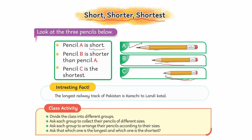B वाली क्योंकि उससे छोटी है, इसका मतलब है Pencil B is shorter than Pencil A — यानि ये B वाली जो है वो A वाली से छोटी है। और अगर C वाली pencil की बात करो, तो ये सबसे छोटी है, इस वजह से इसे क्या कहेंगे — Shortest।